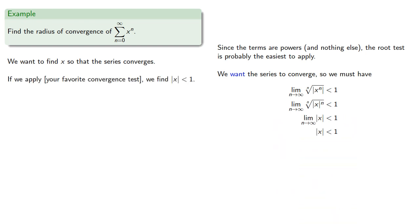So, if we apply our favorite convergence test, we find the absolute value of x must be strictly less than 1, so the series has radius of convergence r equal to 1.